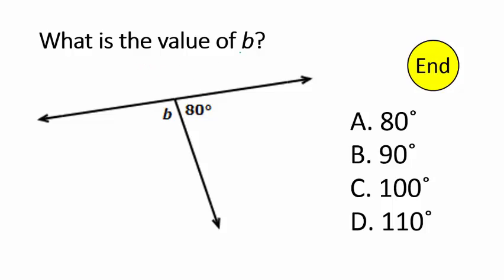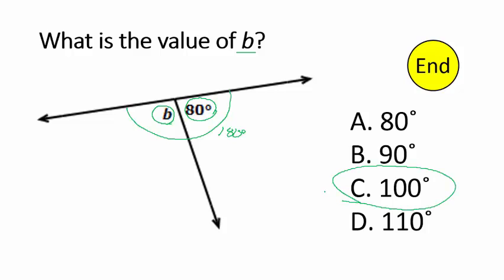What is the value of B? We're looking for the angle here. The only thing you have to know is that the entire angle always equals 180 degrees. If we know this 80-degree angle, then whatever the other one is has to add up to 180. So it's a 100-degree angle — when you add them together, you get 180.